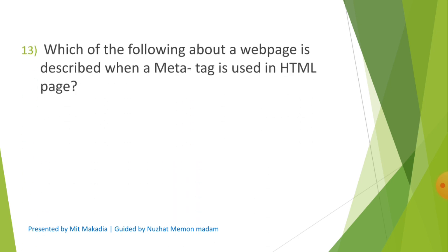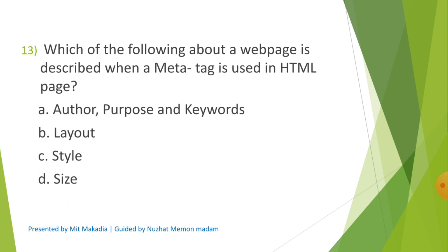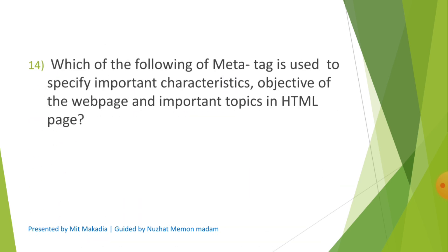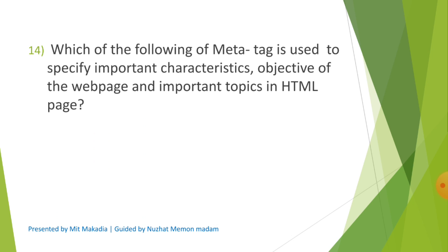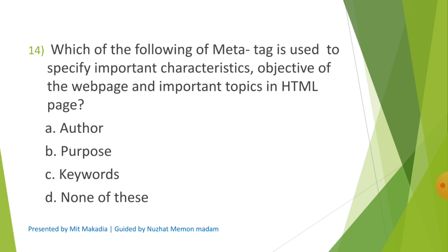Question 13: Which of the following about a web page is described when a meta tag is used in an HTML page? Options are A) Author, purpose and keywords. Question 14: Which attribute of meta tag is used to specify important characteristics, objectives of the web page and important topics in the HTML page? Options are A) Author, B) Purpose, C) Keywords, D) None of these. The correct answer is C) Keywords.